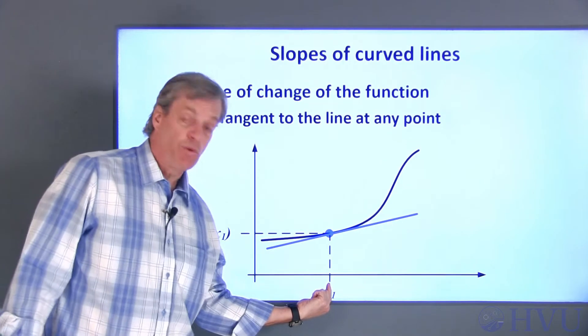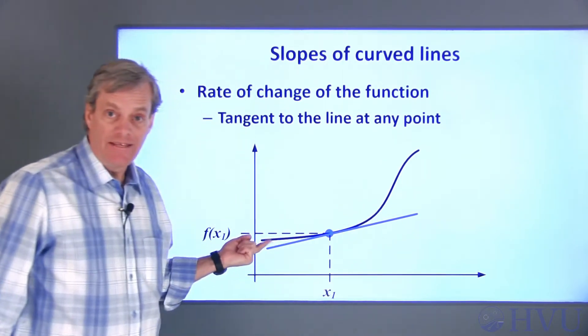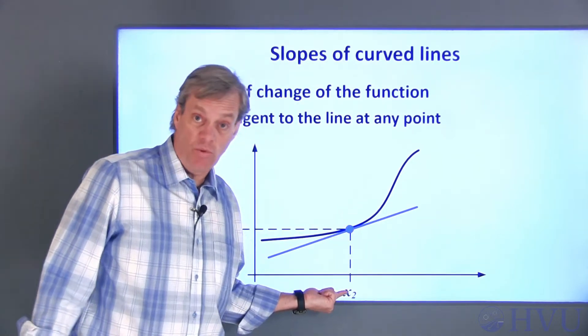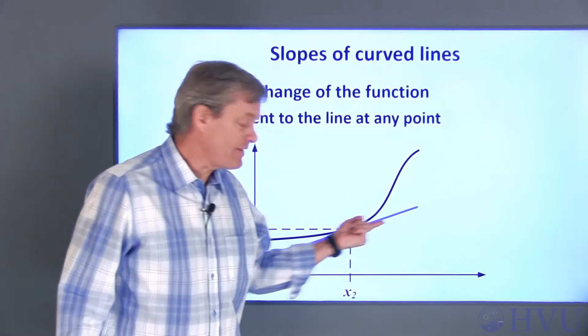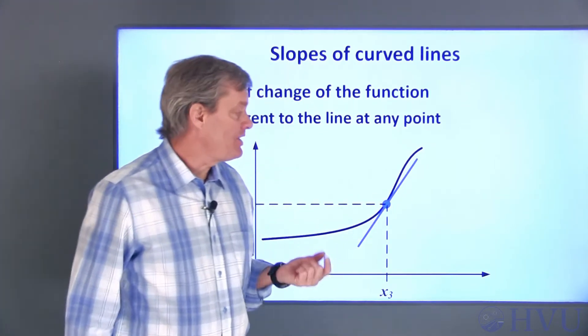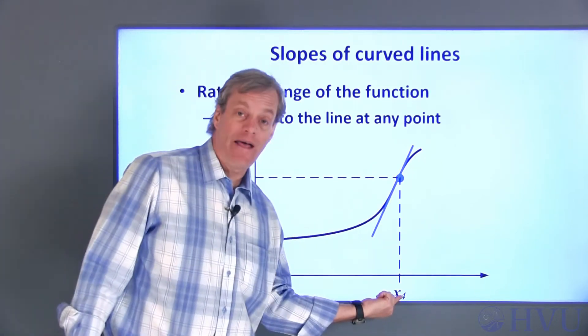So, if I pick a point x1 here, the rate of change looks like this. If I change that and look at the rate of change at a different point x2, it looks like this. But no matter where on the curve I check the slope, it's always tangent to the curve at that point.